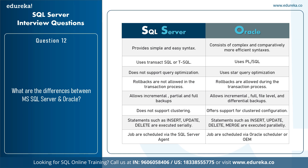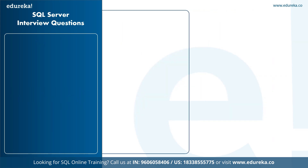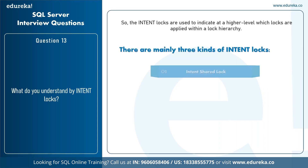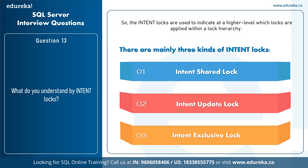The next question is: what do you understand by intent locks? Microsoft SQL Server uses a lock hierarchy whenever data is read or modified. When a row is read, SQL Server acquires a shared lock; when a row is changed, it acquires an exclusive lock. These locks are incompatible with each other, and this is where intent locks come in. Intent locks indicate at a higher level which locks are applied within a lock hierarchy. The three kinds are: Intent Shared (IS) lock — used when there's a shared lock at the row level; Intent Update (IU) lock — used when there's an update lock at the row level; and Intent Exclusive (IX) lock — used when there's an exclusive lock at the row level.